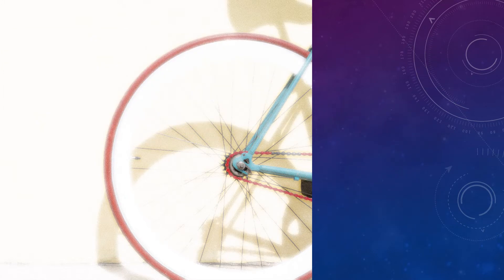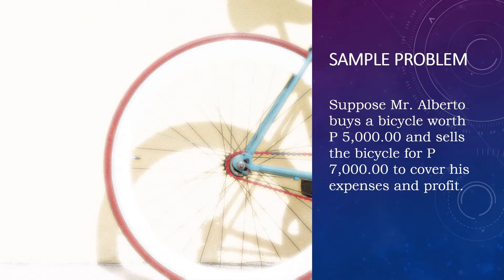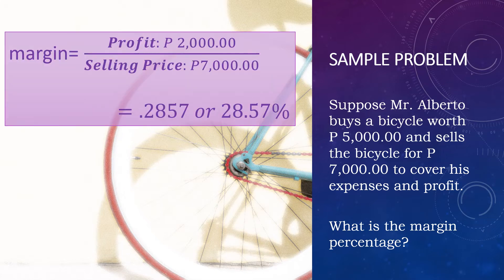For the margin problem, suppose Mr. Alberto buys a bicycle worth 5,000 pesos and sells the bicycle for 7,000 pesos to cover his expenses and profit. What is the margin percentage? Margin is equal to profit divided by selling price. The profit is 2,000 and the selling price is 7,000, so the computed margin is 28.57%.